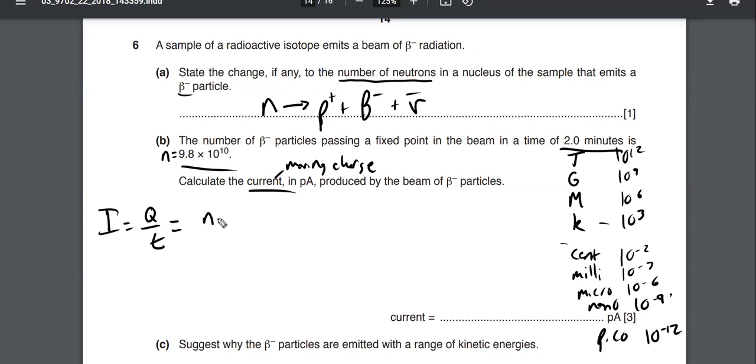It's E, elementary charge. It's an electron. So it's got the same charge as an electron, elementary charge E. So we know the number. It's a lot. 9.8 by 10 to the 10. And each one has a charge of...